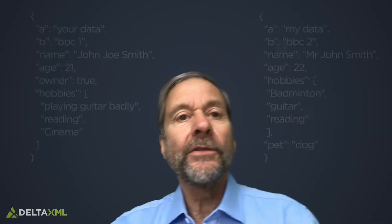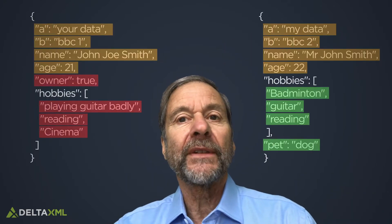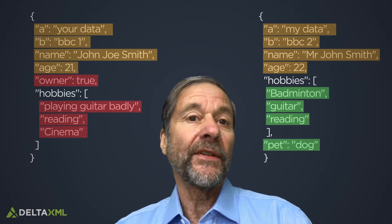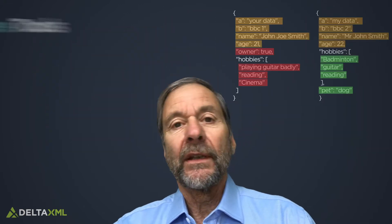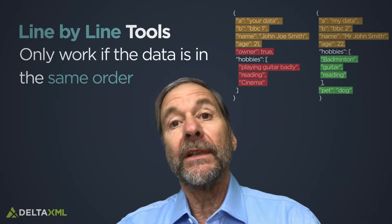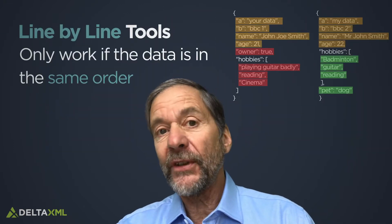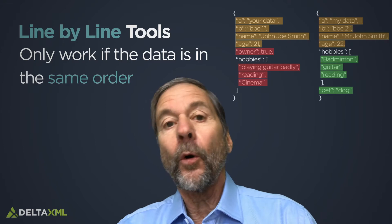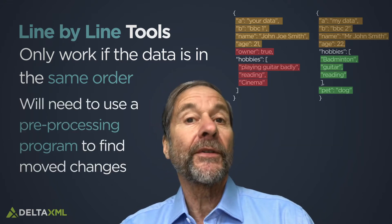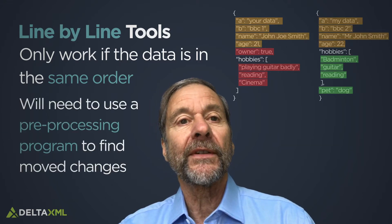You can use a line-based diff tool, but they only work if the data is in the same order — so only if the two JSON files have come from the same system, or else you use some sort of pre-processing before the comparison process.